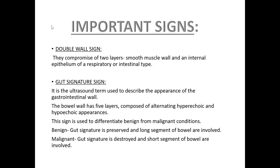Second, the gut signature sign. It is the ultrasound term used to describe the appearance of the gastrointestinal wall. The bowel has five layers composed of alternating hyperechoic and hypoechoic appearances. This sign is used to differentiate benign from malignant conditions. In benign conditions, gut signature is preserved and long segments of the bowel are involved. These signs may not always be present.